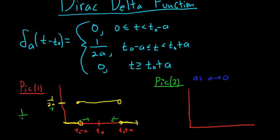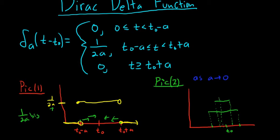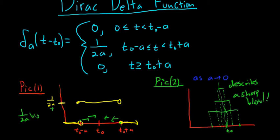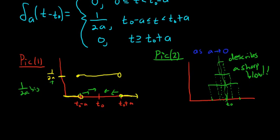So the smaller a gets, this height gets bigger and bigger. One situation might look like a tall narrow rectangle; then a gets even smaller so the sides get closer and closer to t₀. It just keeps going up and up and up forever. This describes a sharp blow — as a gets really close to 0, the height blows up and goes to infinity.